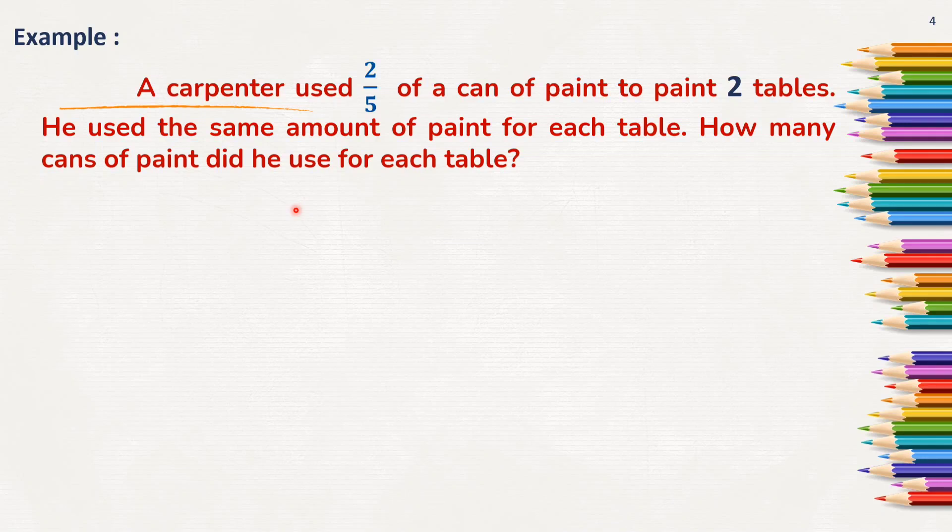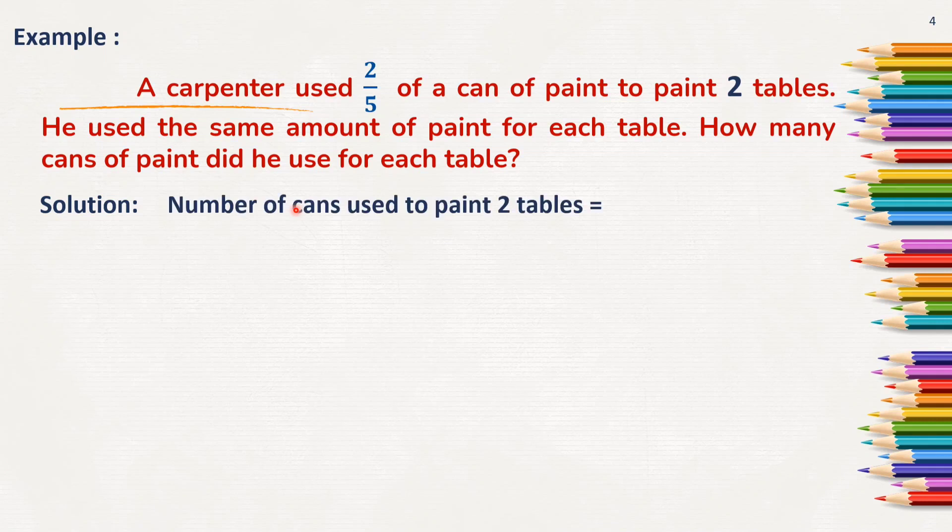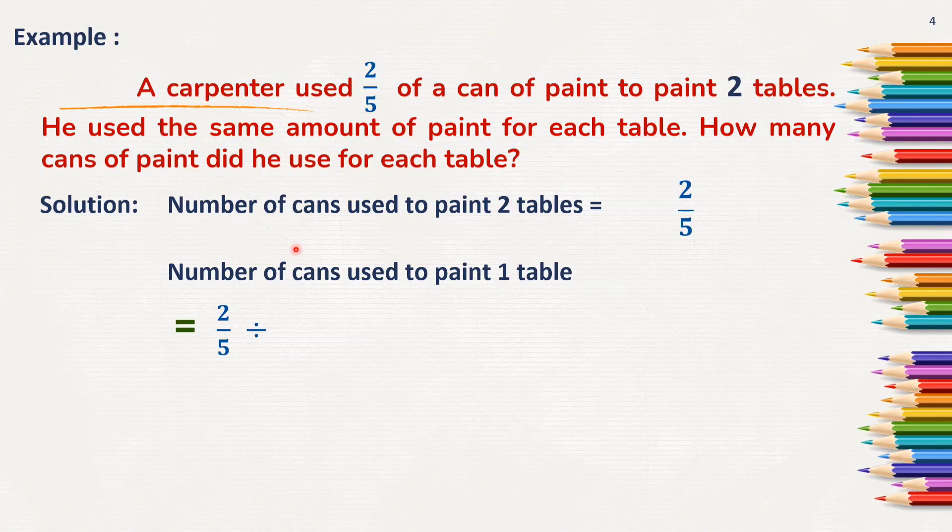So, here number of cans used to paint 1 table is 2 by 5 divided by 2 which means 2 by 5 divided by 2 by 1. When no denominator is given, we will have to consider 1 as denominator, right?